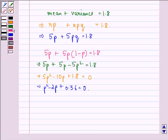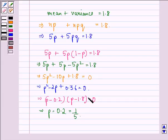This implies P minus 0.2 times P minus 1.8 is equal to 0. And this implies that P is equal to 0.2, that is equal to 1 by 5. We neglect P equal to 1.8 because this is greater than 1.